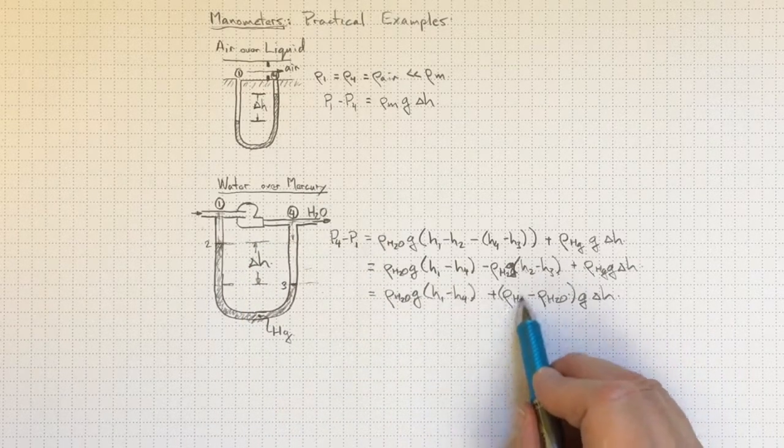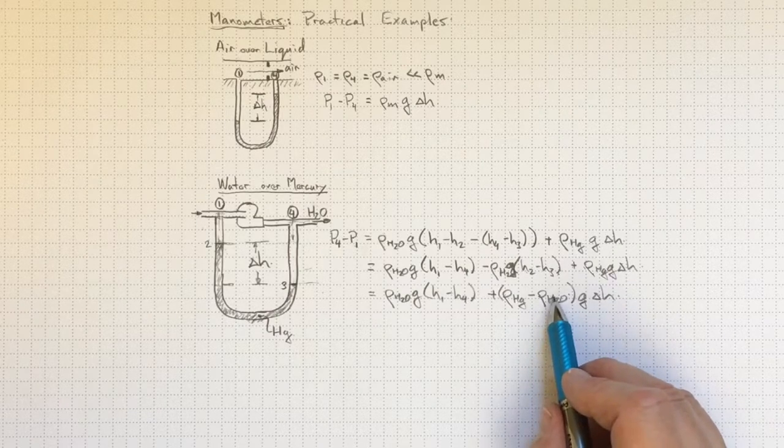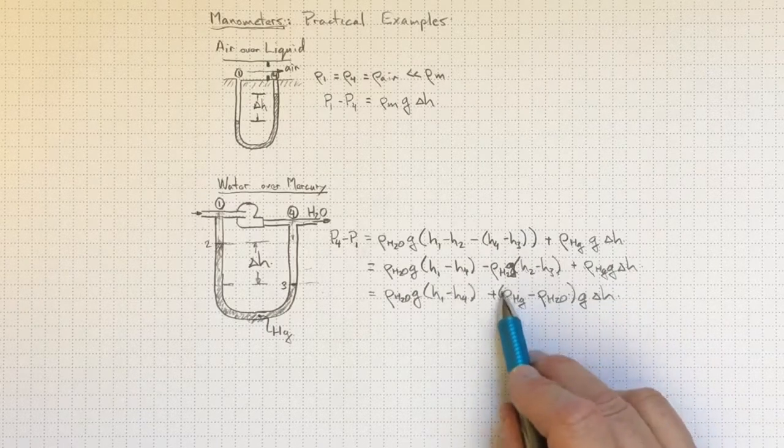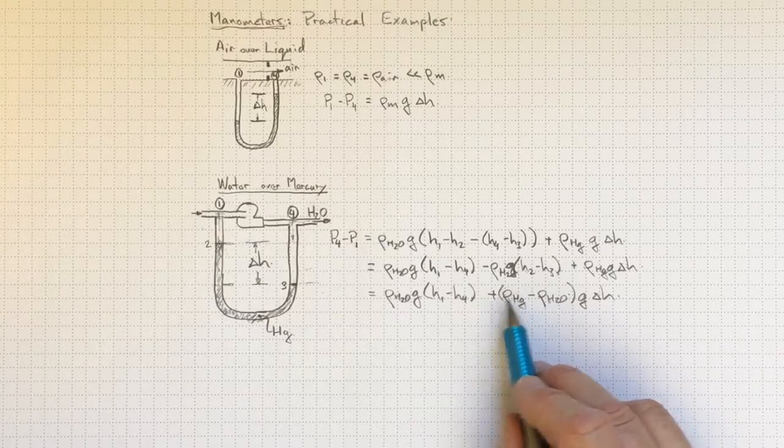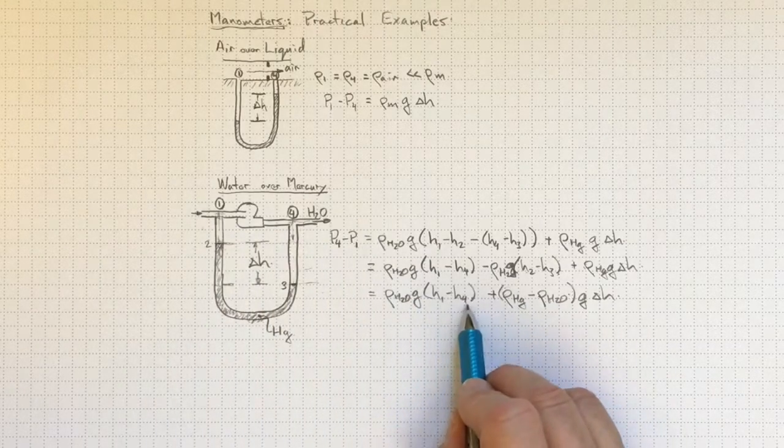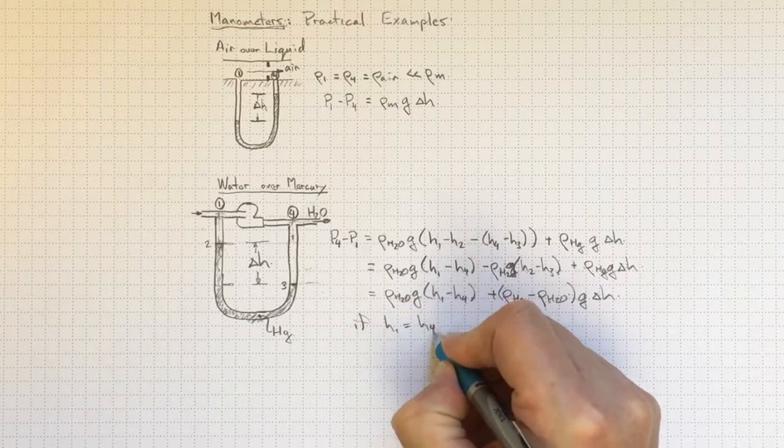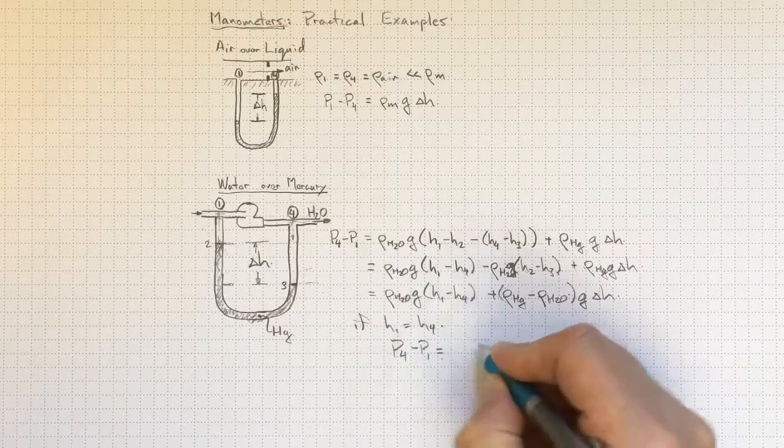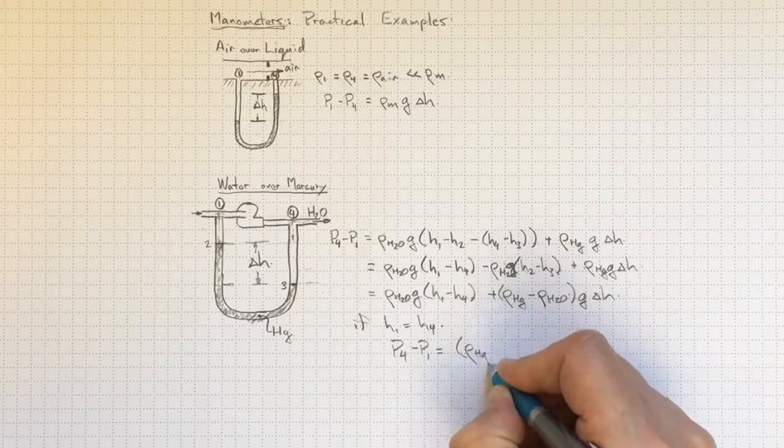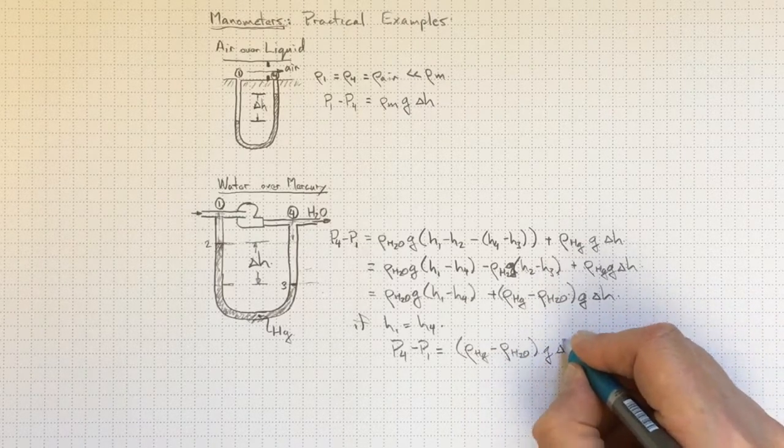This is up around 13 and a half thousand. This is down around a thousand kilograms per cubic meter. So clearly the density of the mercury is going to have by far the biggest effect. Now if H1 and H4 are the same then we'll wind up with that delta P, the P4 minus P1 just equal to the density of mercury minus the density of water times G times delta H.